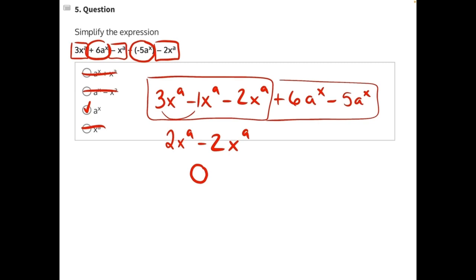The next thing we would simplify is 6 minus 5, which would give us 1ax, which is the same thing as a to the x, making c our correct answer. We'll see you next time.